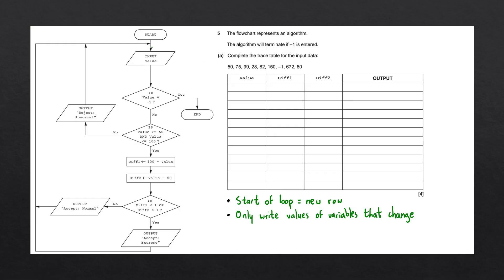Let's now complete this trace table by going through this program outlined in the flowchart. We'll use the input data whenever we see an input block. The first block is always the starting terminal. We then follow the arrow to the next block, which is an input block. This tells us that the user must enter a value, assigned to the variable 'value'. We're entering the first data item, which is 50, and we'll update the table with 50.